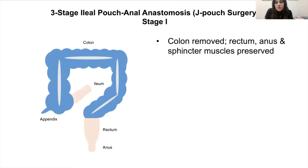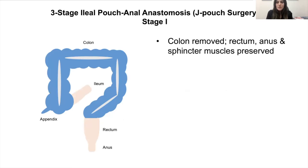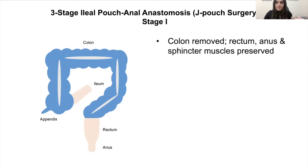The three-stage operation is generally performed for patients who are malnourished, sick on steroids, having urgent surgeries, or sometimes when at the time of surgery we can't reach the pouch down to the pelvis. Patients who are sick and have been on steroids for a long time can develop scarring of the mesentery — the blood supply to the small bowel — that could prohibit us from reaching the pouch down to the anus. So we do it in three stages to allow time to recover and for nutritional status to improve.